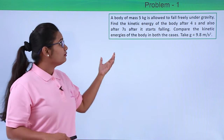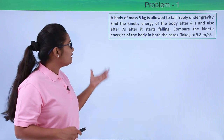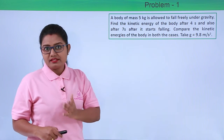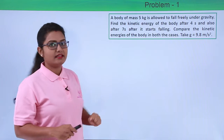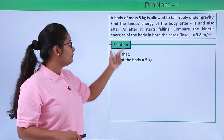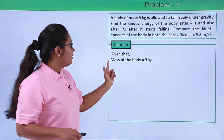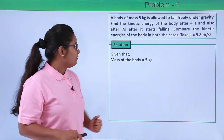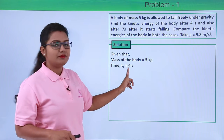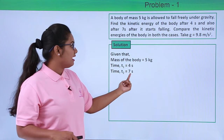We have a body which is freely falling with a mass of 5 kg, and we need to calculate its kinetic energy after 4 seconds as well as after 7 seconds. The mass of the body is given to be 5 kg. The time T1 is given to be 4 seconds and the time T2 is given as 7 seconds.